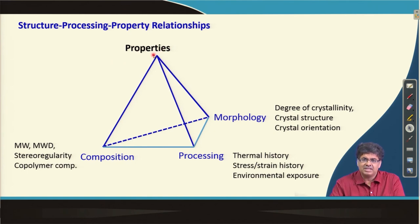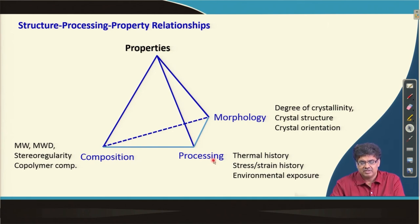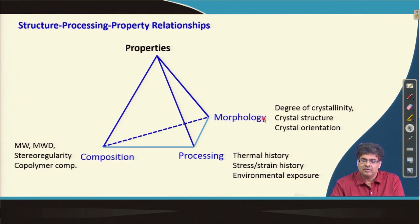The final properties of a polymer product depend on three things: polymer composition — meaning the actual chemical structure, molecular weight, molecular weight distribution, stereoregularity, and for copolymers, copolymer composition; processing, which gives the polymer its thermal history; and morphology of the polymer sample, which is determined by both composition and processing. All three together determine the final properties.